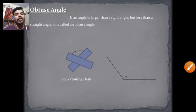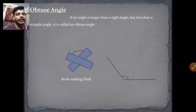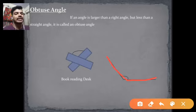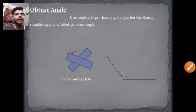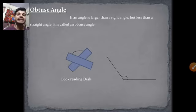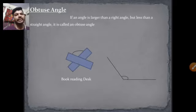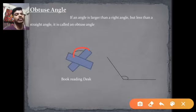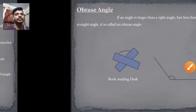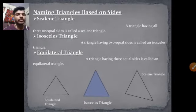Now, obtuse angle. An obtuse angle is greater than 90 degrees but less than a straight angle — it must be less than 180 degrees. For example, when we open a book to read, it makes an obtuse angle. By the way, we can also make acute angles and right angles with the help of a book.